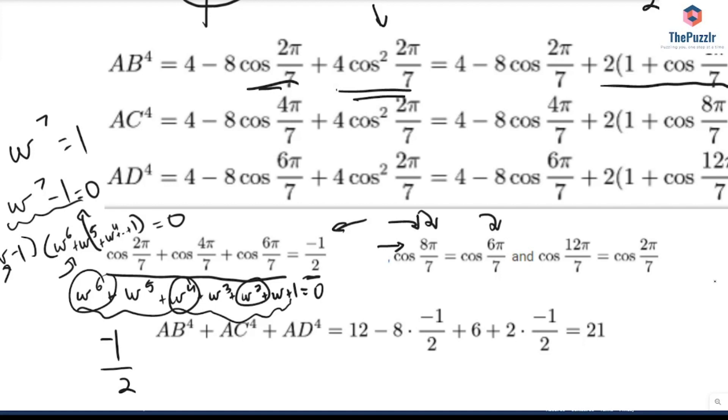Okay, so once we have that, it's just a bit of algebra, we add up everything, and what we're going to get is 12 minus 8 times negative 1 half plus 6 plus 2 times negative 1 half, which is going to give you your answer of 21.